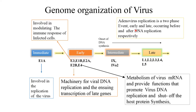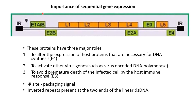Adenovirus replication is a two-phase event consisting of early and late phases, which occur before and after DNA replication respectively. The E1A gene is involved in replication of the virus. The E3 gene is involved in modulation of the immune response of the infected cell. The E2B gene is involved in the machinery of viral DNA replication and ensuring transcription of late genes. The E4 gene is involved in metabolism of viral mRNA and promotes viral DNA replication while shutting off host protein synthesis.